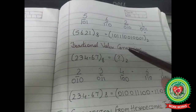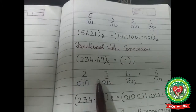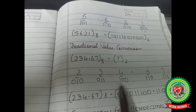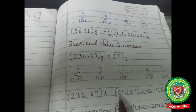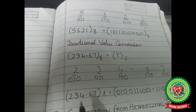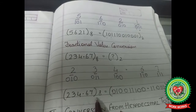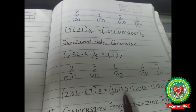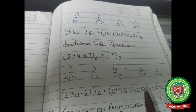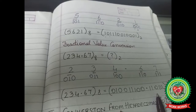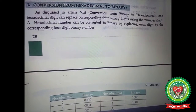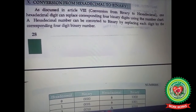Similarly, we can do fractional value conversion. We split the number into digits and write their binary equivalents, then combine all the binary equivalents to form one binary number. The binary equivalent of octal number 234.67 is 010 011 100 . 110 111 base 2.